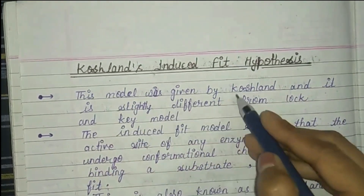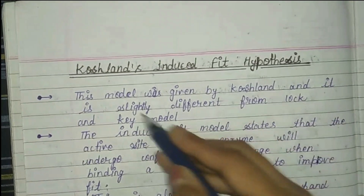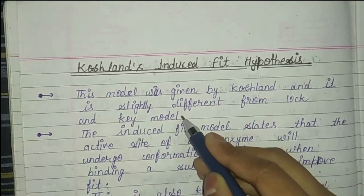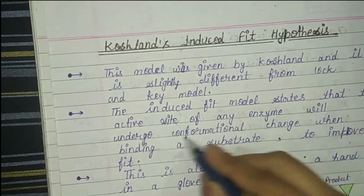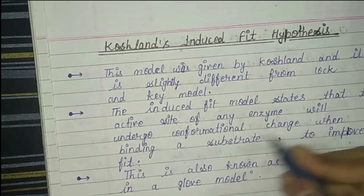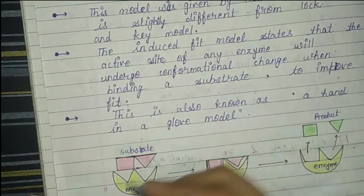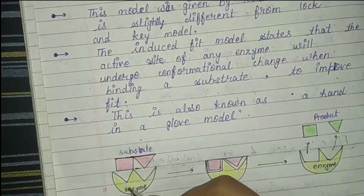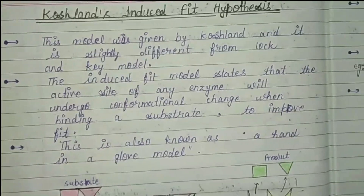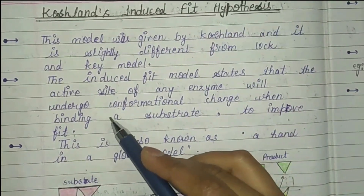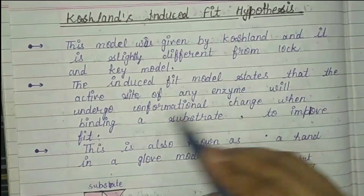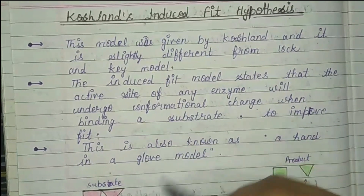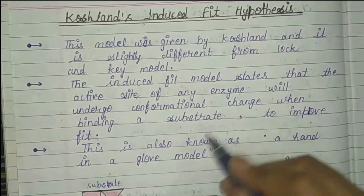This model was given by Koshland and it is slightly different from the lock and key model. The induced fit model states that the active site of any enzyme will undergo conformational change upon binding with the substrate — the active site can change its conformational shape.